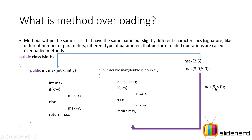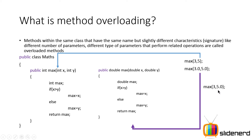Now if you call max(3, 5.0), this is a tricky scenario. The bigger type here is 5.0, which is a double, so Java will automatically convert 3 to a double and call the double version. The compiler won't convert 5.0 down to an integer because of Java's automatic type casting rule: you can convert something small to something bigger, but converting big to small risks losing data — for example, 5.4 would lose the 0.4. So the second method gets called.